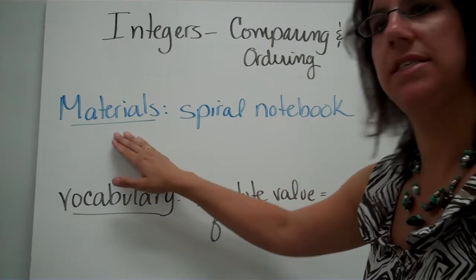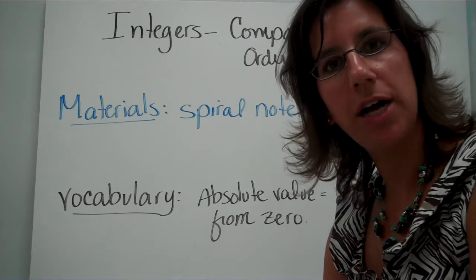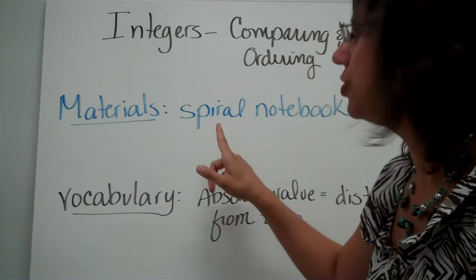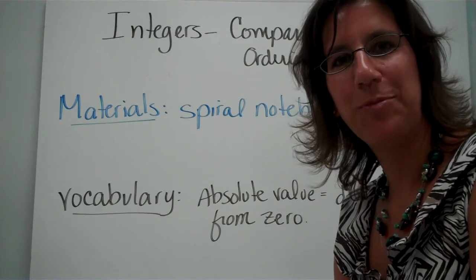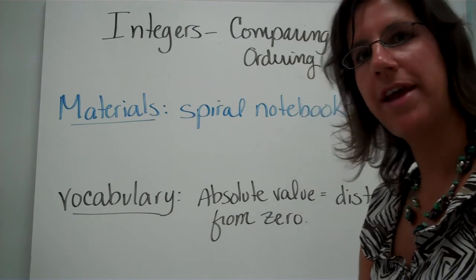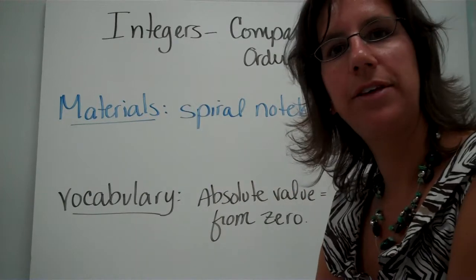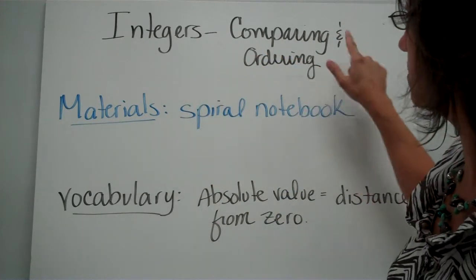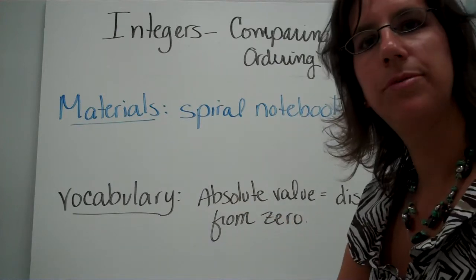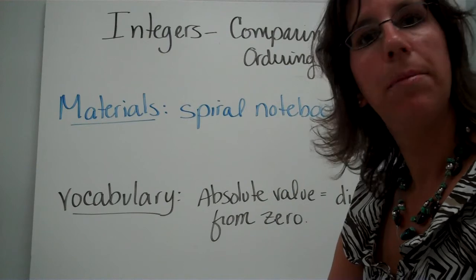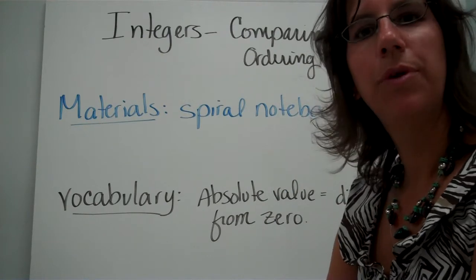As you can see here, it says materials. These are the materials you're going to need for this particular video, so go ahead and pause the video to get those materials out. If you're looking for your spiral notebook, go to the notes section. Go ahead and copy down the vocabulary you're going to need for this lesson, as well as the title. Write down integers, comparing and ordering, and the vocabulary: absolute value is equal to the distance from zero. Pause the video if you need to, then come on back.